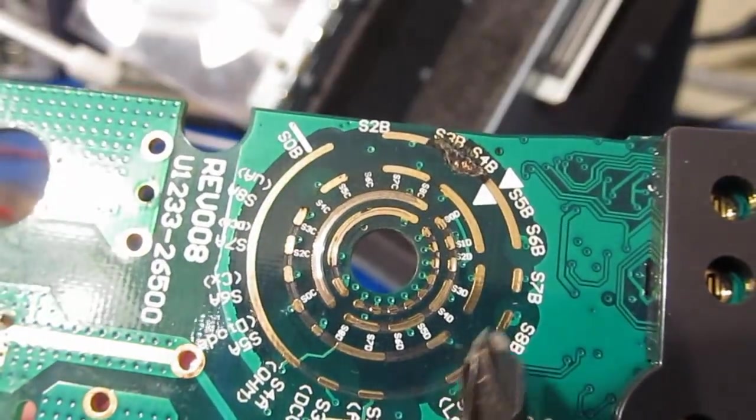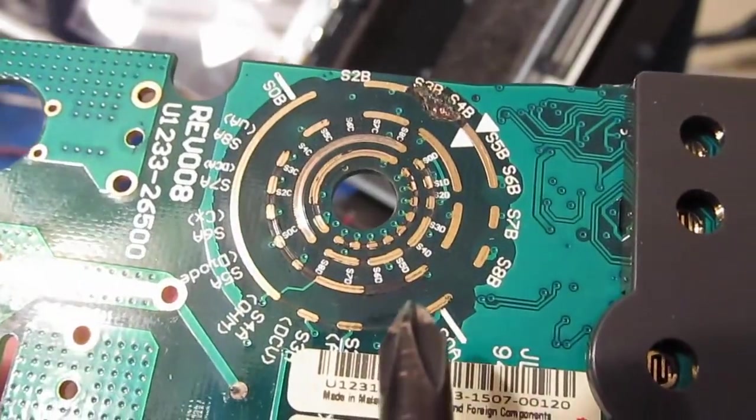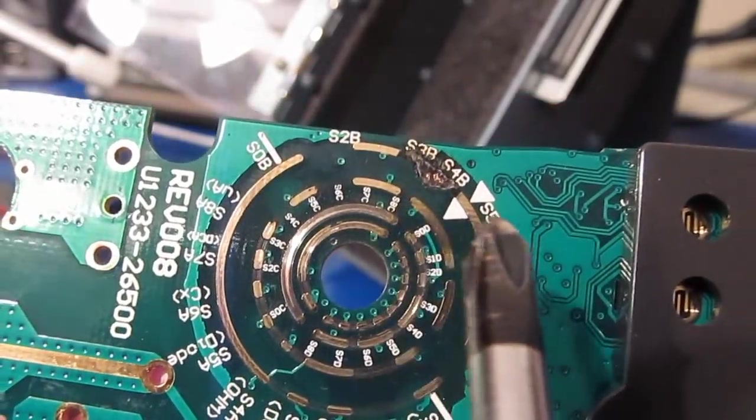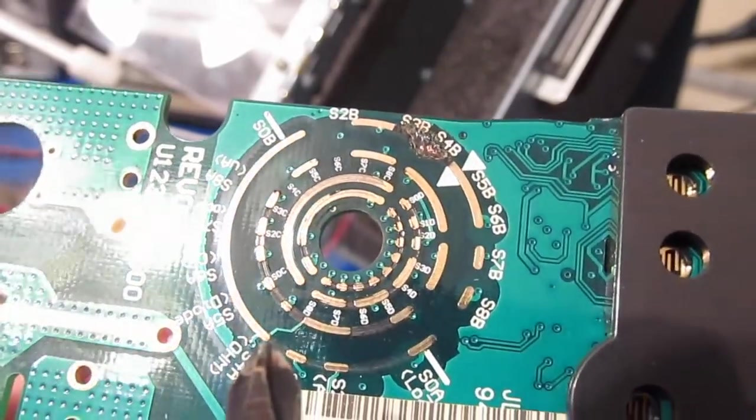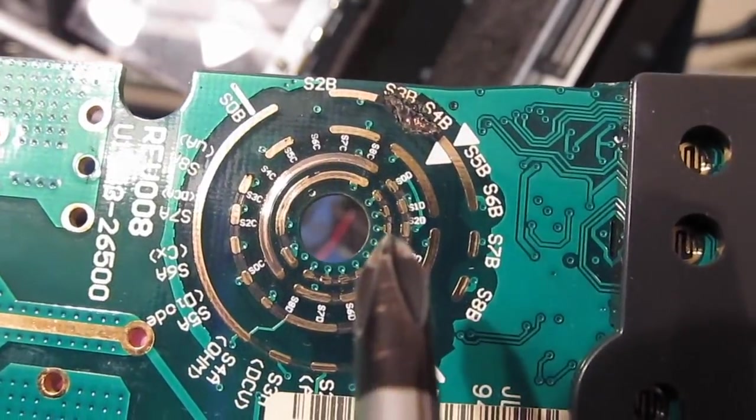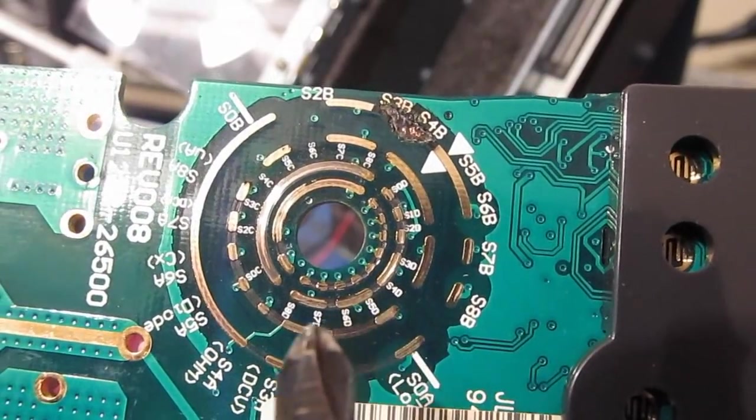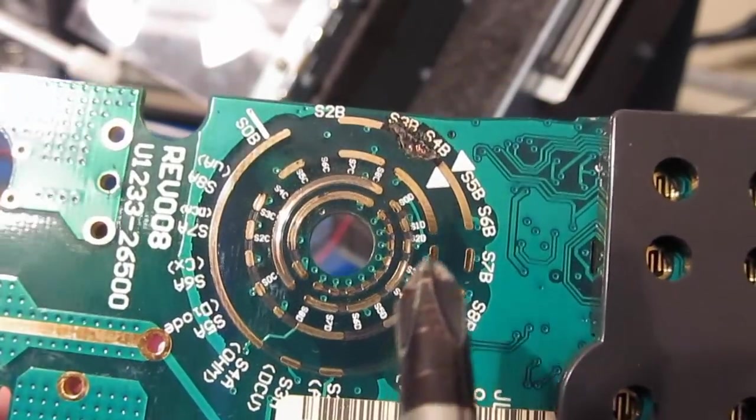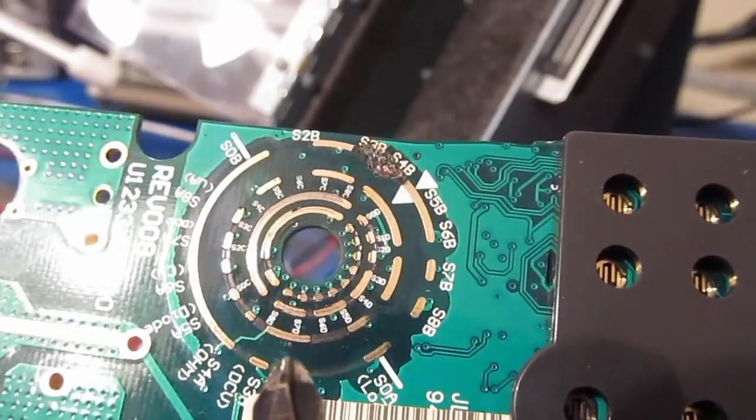Again, these contacts here were not cycled, so those are going to be in still original condition. Some of these down here, that looks pretty bad. Let me take some pictures of this under the microscope and we'll have a look at it.